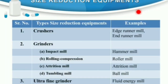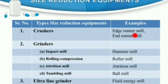Classification of size reduction equipment: various types of equipment are used for size reduction, such as crushers, grinders, ultra fine grinders, and cutting machines. Examples of crushers include edge runner mill and end runner mill. Grinders include hammer mill, roller mill, attrition mill, and ball mill. Ultra fine grinders include the fluid energy mill, and the cutting machine is the cutter mill.